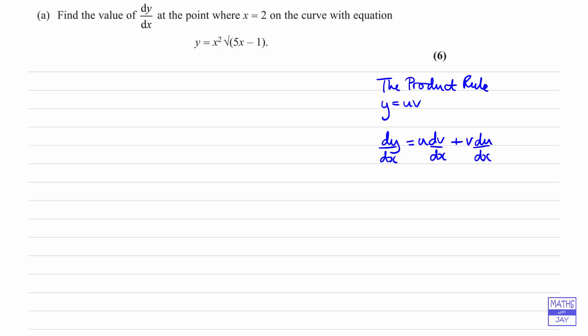So we need to be clear what u is, what v is, differentiate them both and then combine them using this formula. Let's have a look at the function that we've been given. I'm going to write it to make it a little easier to see how to differentiate it. So instead of the square root symbol, I'm going to write that as power of a half.